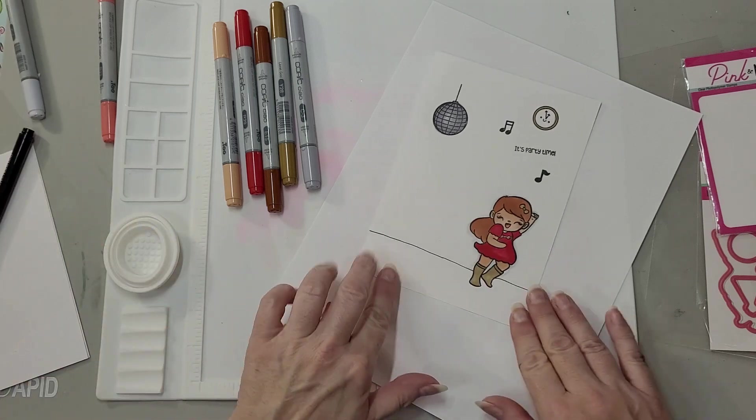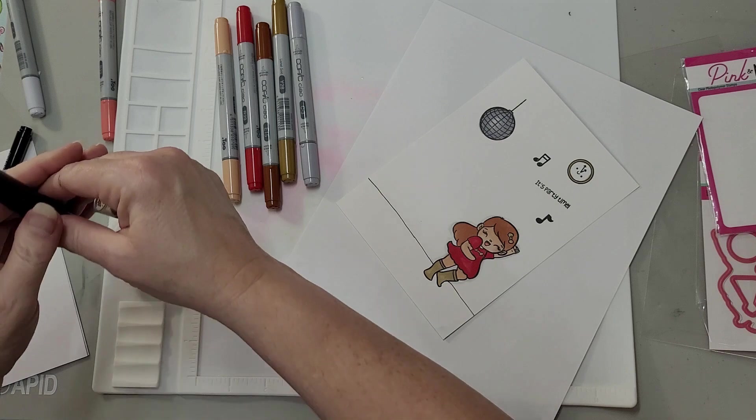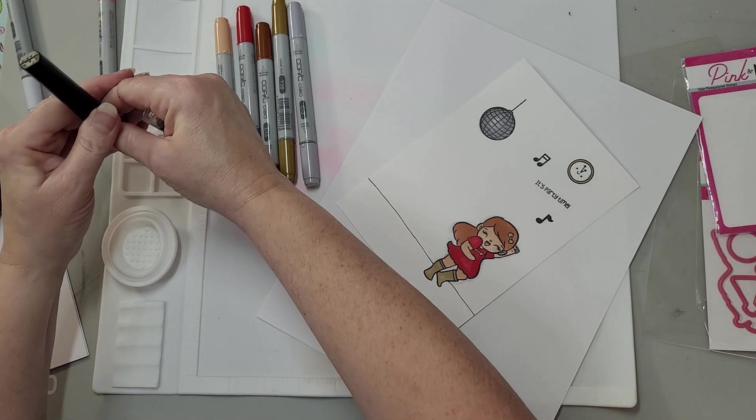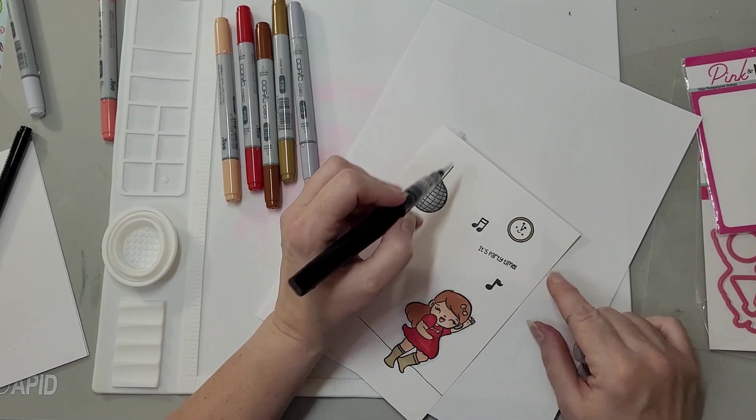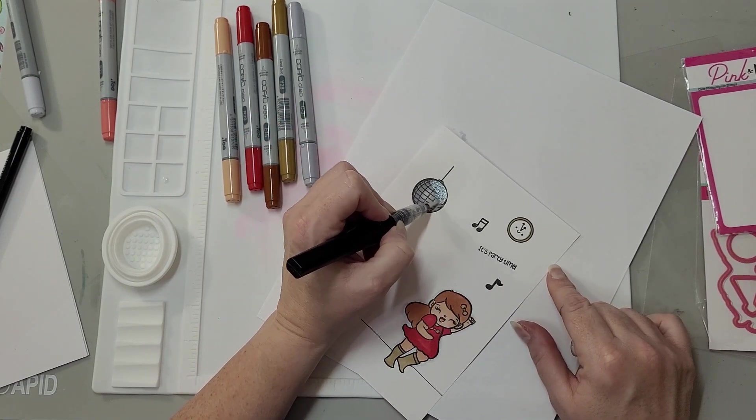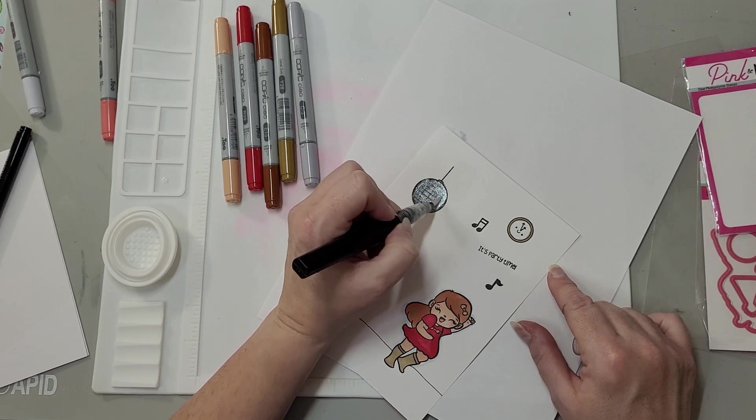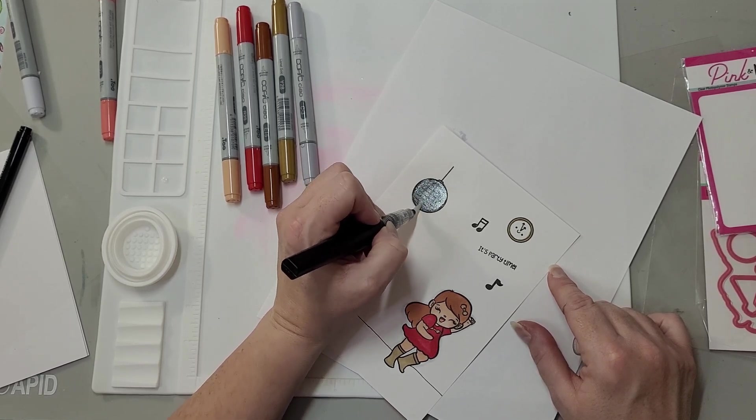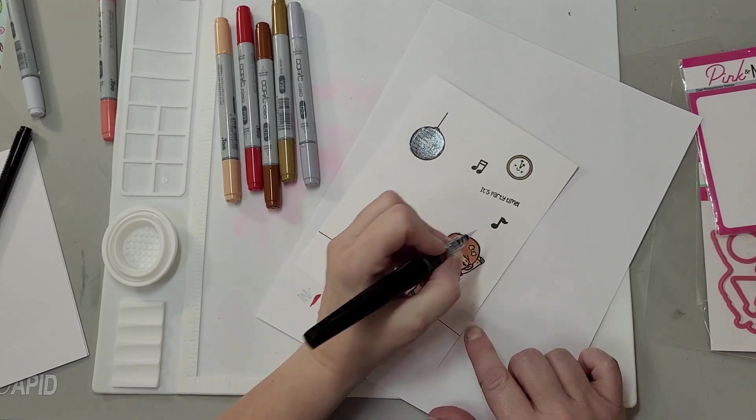Alright, now the ground. Alright, now this is a clear glitter pen that I'm just going to go over the disco ball with. I thought that's had a chance to dry. And then maybe her bow, let's put some glitter on her bow.